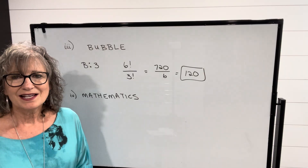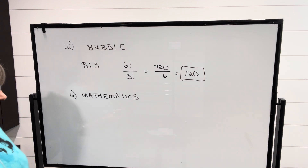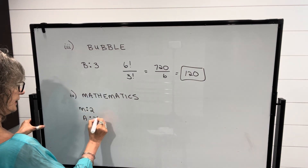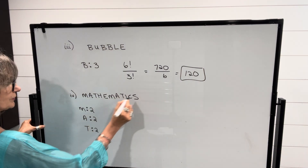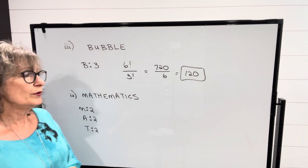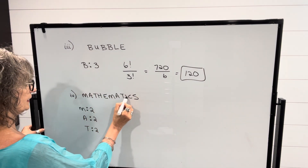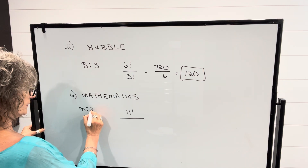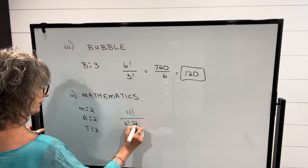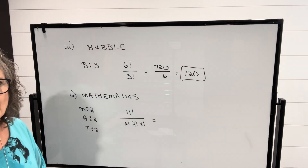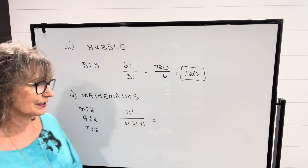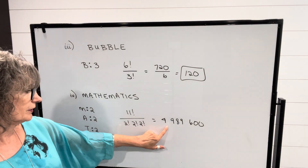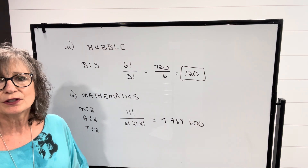Sometimes you'll encounter words that have more than one letter repeated. In this case we have M appearing twice, A appearing twice, and T appearing twice — all other letters appear once. To calculate this, we take the total number of letters: eleven factorial. Then we divide by two factorial for M, divide by two factorial for A, and divide by two factorial for T. Be careful — do not multiply those factorials together; you can't say this equals eight factorial. Take eleven factorial divided by two factorial divided by two factorial divided by two factorial, and you get four million nine hundred and eighty-nine thousand six hundred different arrangements of these eleven letters.